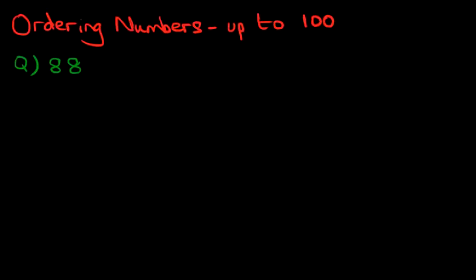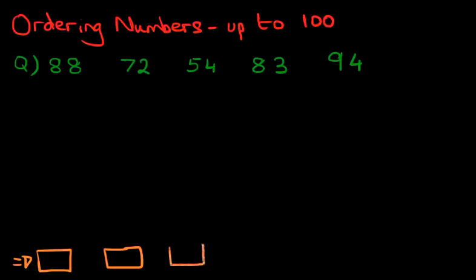We've got 88, 72, 54, 83 and 94. And what the question is asking us is, in fact, let's just draw the boxes first. One, two, three, four, and the last box over here, we've got five boxes.